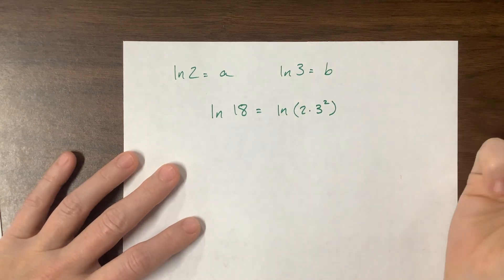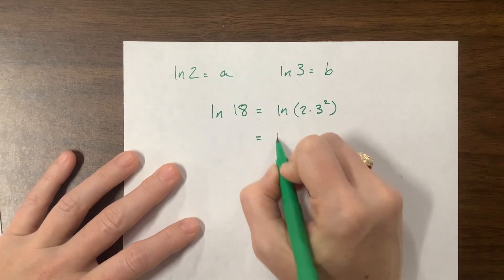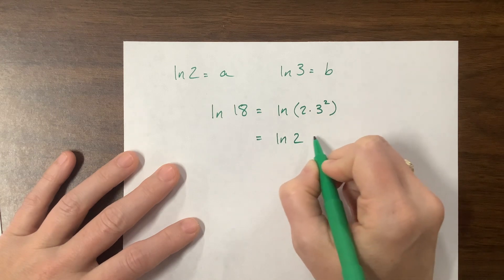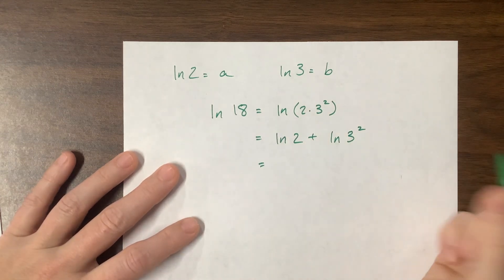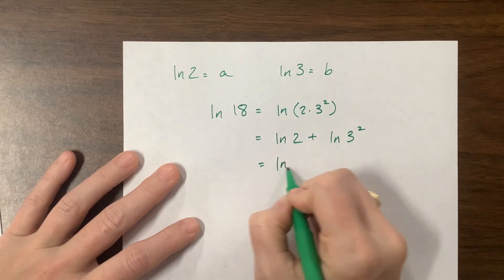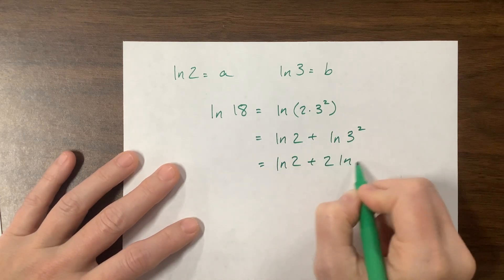So I can break this apart and say this is the natural log of 2 plus the natural log of 3 squared, which is equal to, now this 2 can come out to the front, natural log of 2 plus 2 times the natural log of 3.